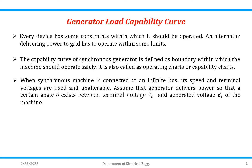Whenever the synchronous machine is connected to an infinite bus, its speed and terminal voltages are fixed and unalterable — that is, they are not going to change. Now, let us assume that the generator is delivering power so that a certain angle delta exists between the terminal voltage VT and the generated voltage EI of the machine.